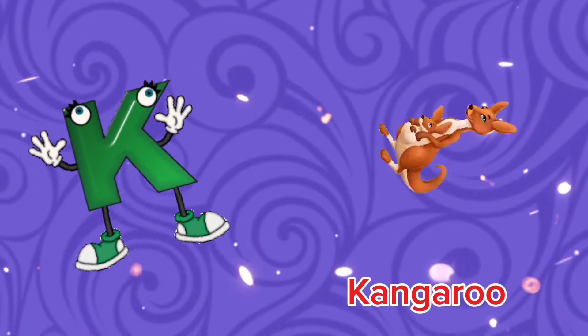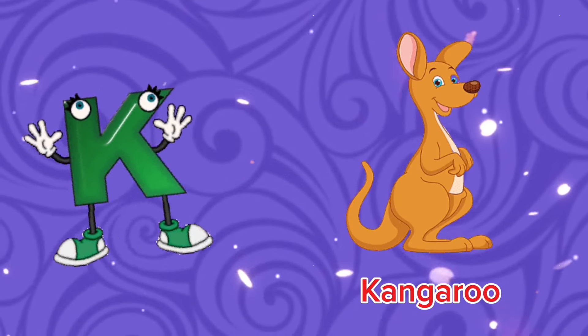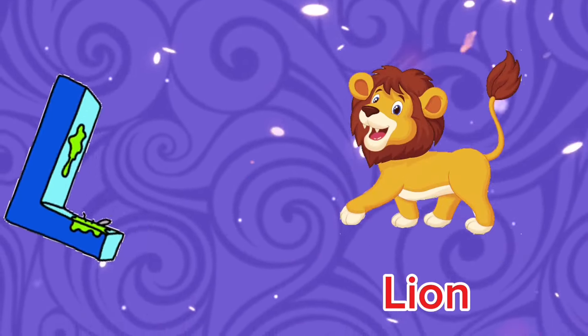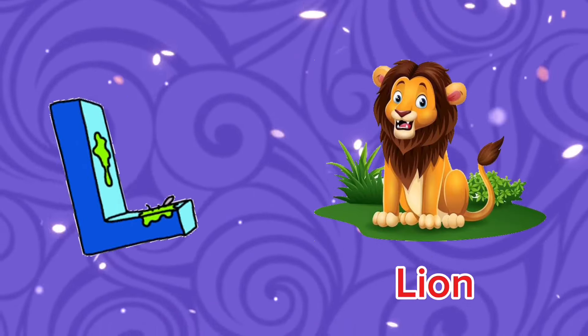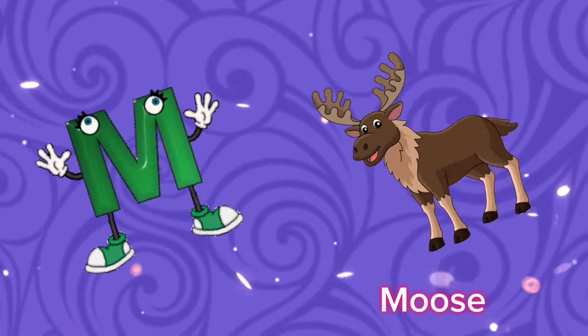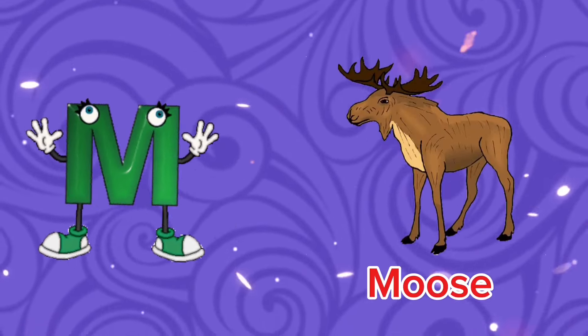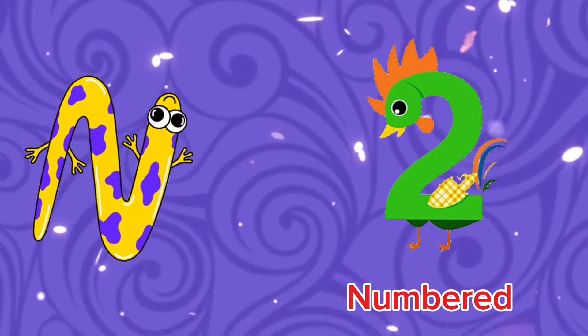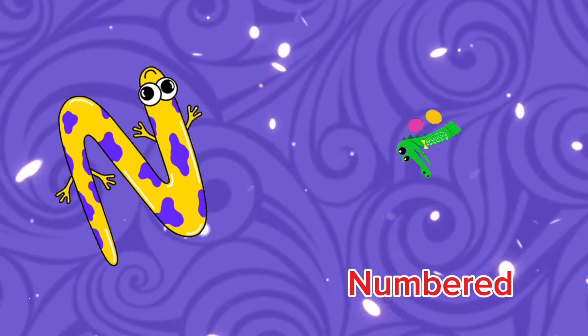K is for Kangaroo, C, kangaroo. K is for Kangaroo, C. L is for Lion, L, lion. L is for Lion, L. M is for Moose, M, moose. M is for Moose, M. N is for Number, N, number. N is for Number, N. O is for Ostrich, O, ostrich. O is for Ostrich, O.